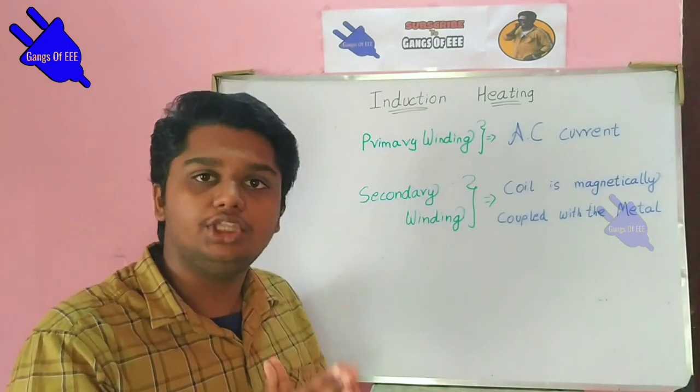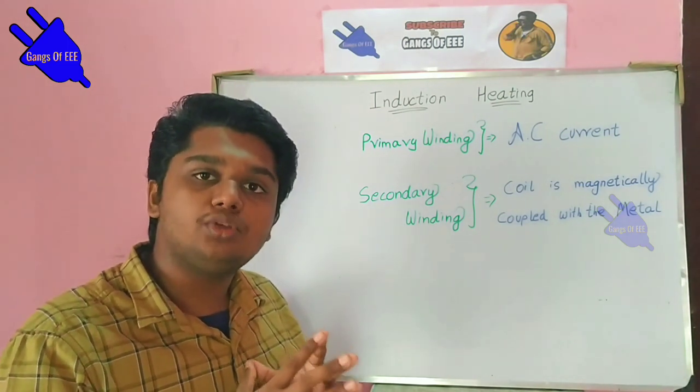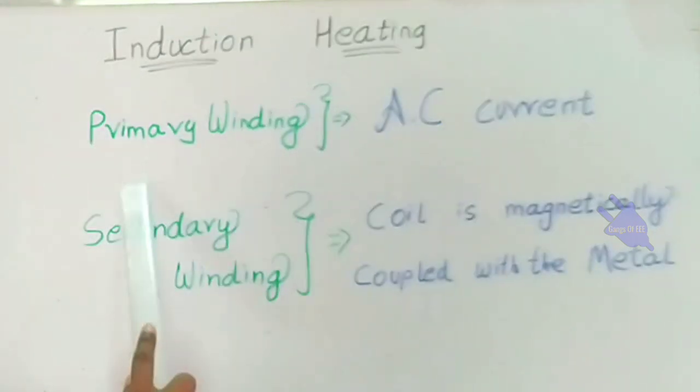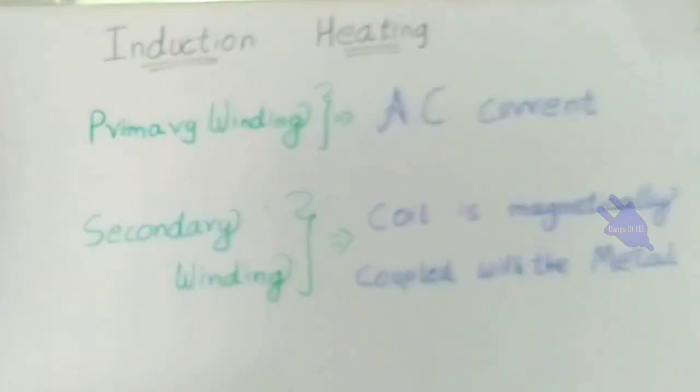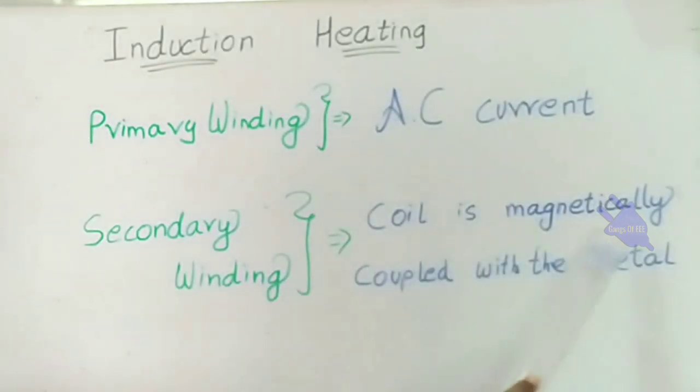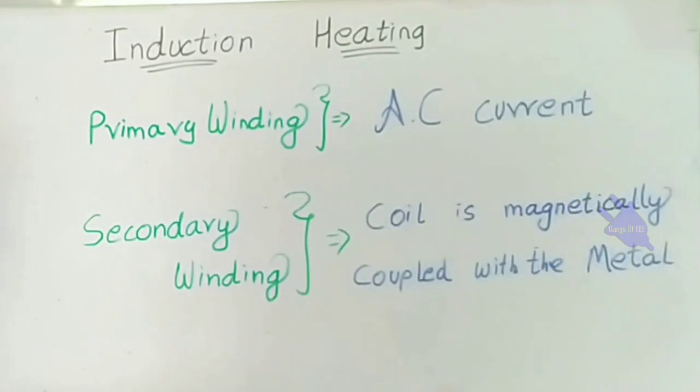In the transformer, we put AC current in the primary winding. The secondary winding is a short circuit, and the coil is magnetically coupled with the metal.